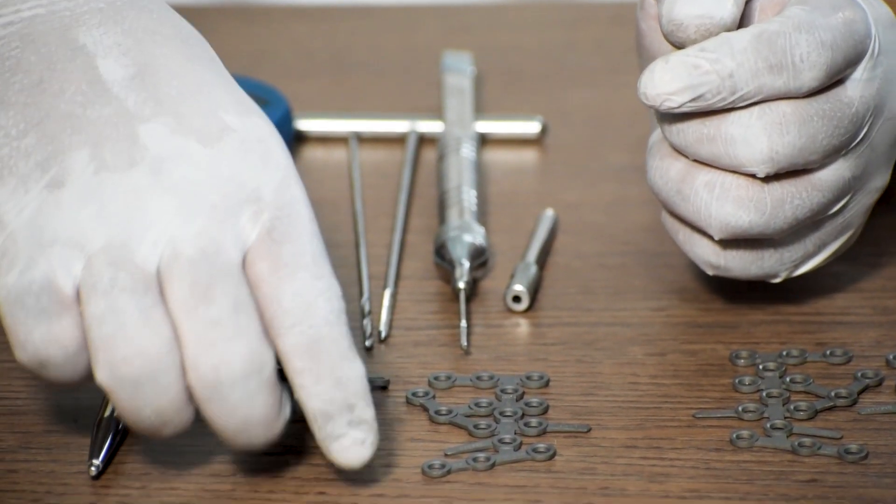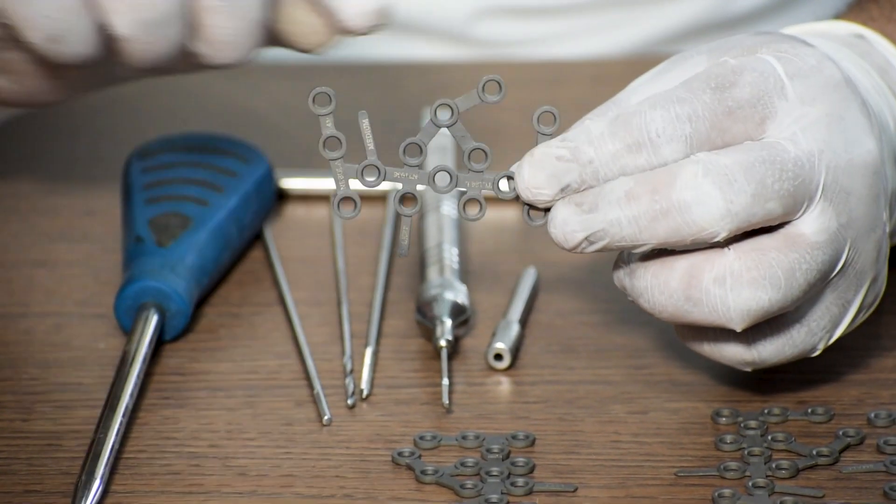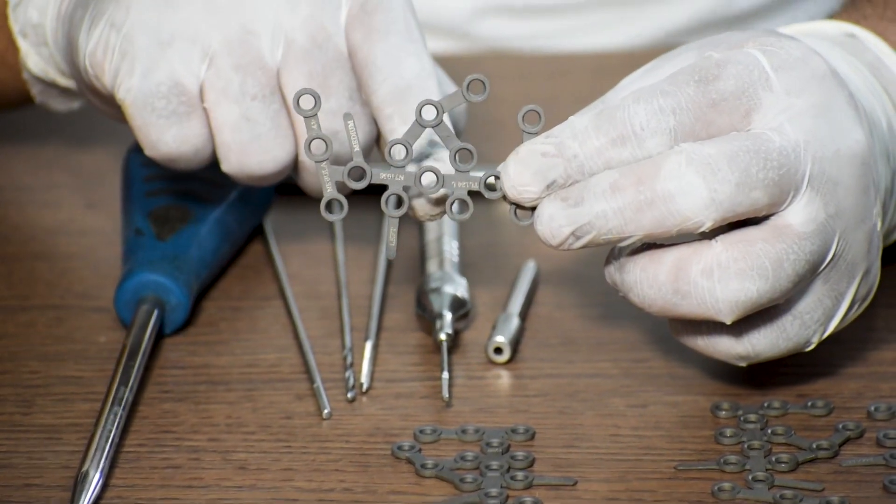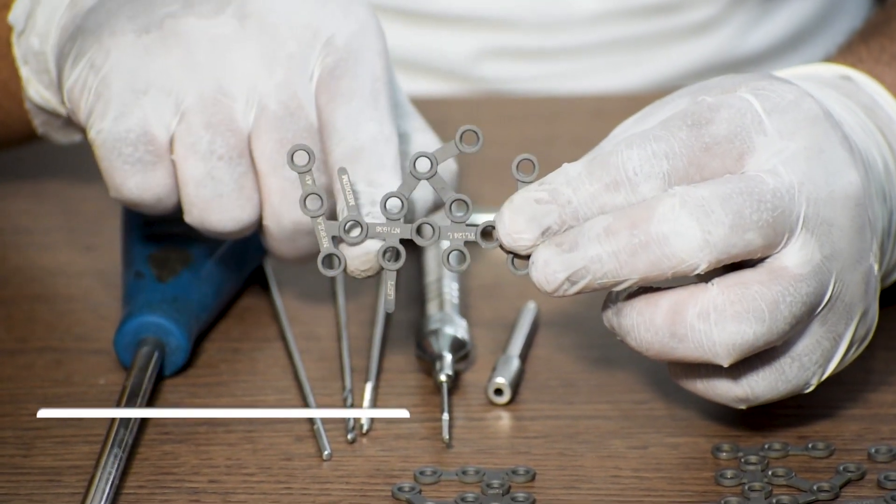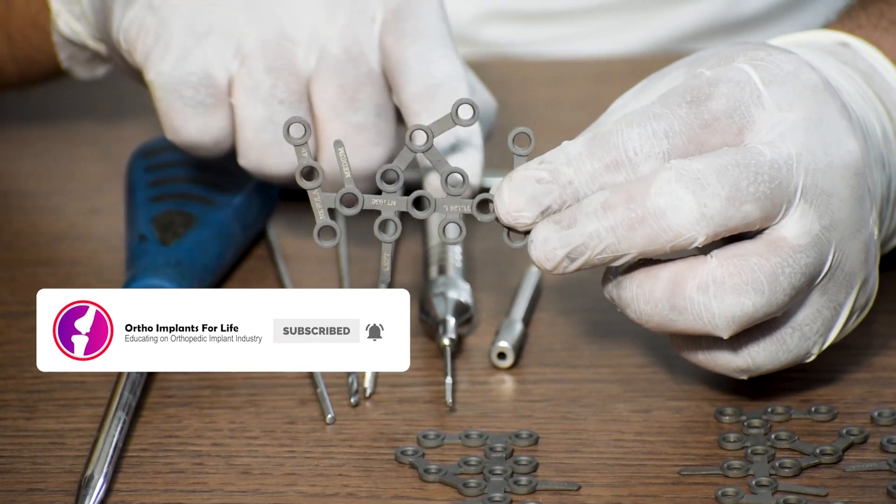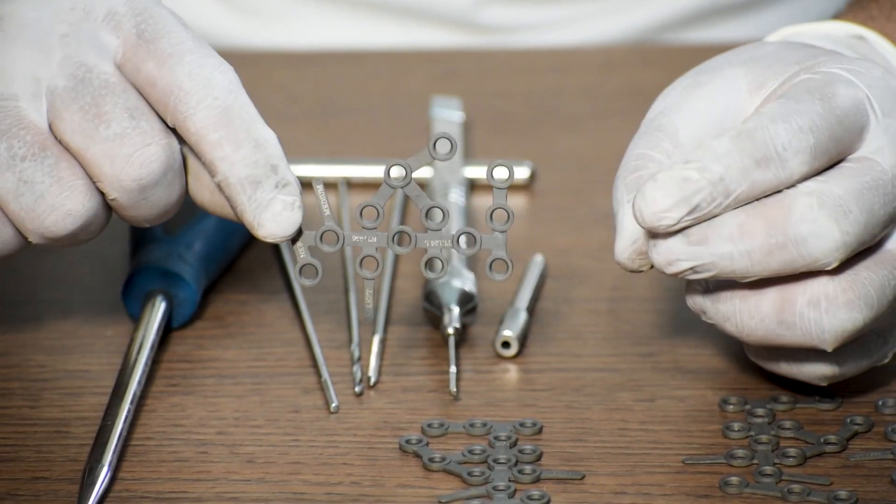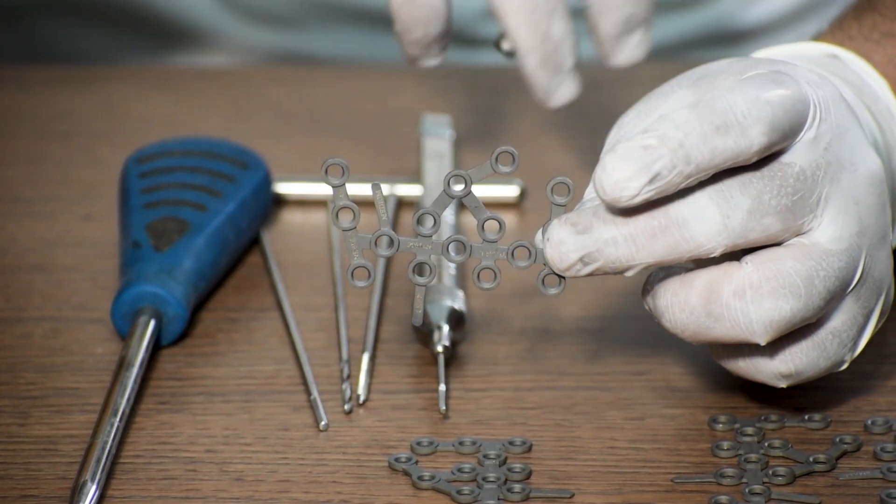Now let's come to the fixation part. As you can see these holes, these are all locking holes. You can pass a locking screw, either a locking screw or a non-locking cortical or cancellous screws can be used to attach this plate in the fracture site.